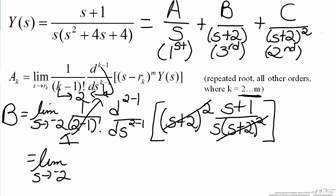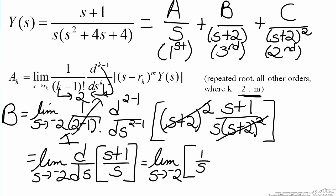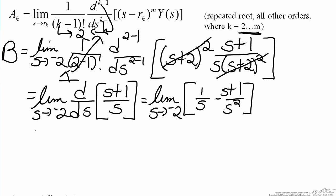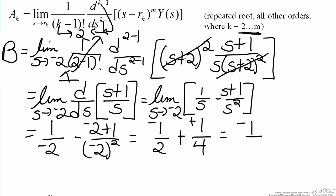So now what we are left with is the limit as s approaches negative 2 of the first derivative of s plus 1 over s. So by using the quotient rule we can obtain the fact that the derivative here is equal to 1 over s minus s plus 1 over s squared. We can now evaluate this limit to find the value of B, and that leaves us with our final answer for B, which is negative 1 quarter.